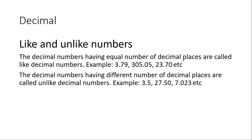Now, decimals. Like decimal numbers: decimal numbers that have an equal number of decimal places are called like decimal numbers. As you can see in these examples, every number has two digits after the decimal point — 1.79, 0.52 (two digits), 0.70 (two digits) — these are called like decimal numbers.